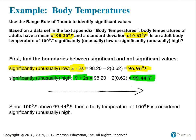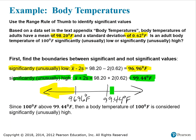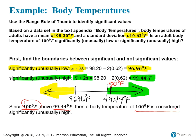Looking at this on a number line, there is a boundary at 96.96 degrees Fahrenheit and a boundary at 99.44 degrees Fahrenheit. Values below 96.96 are unusually low temperatures; values above 99.44 are unusually high or significantly high temperatures. Since 100 degrees Fahrenheit falls in the green shaded section above 99.44 degrees Fahrenheit, this body temperature is considered to be significantly or unusually high.